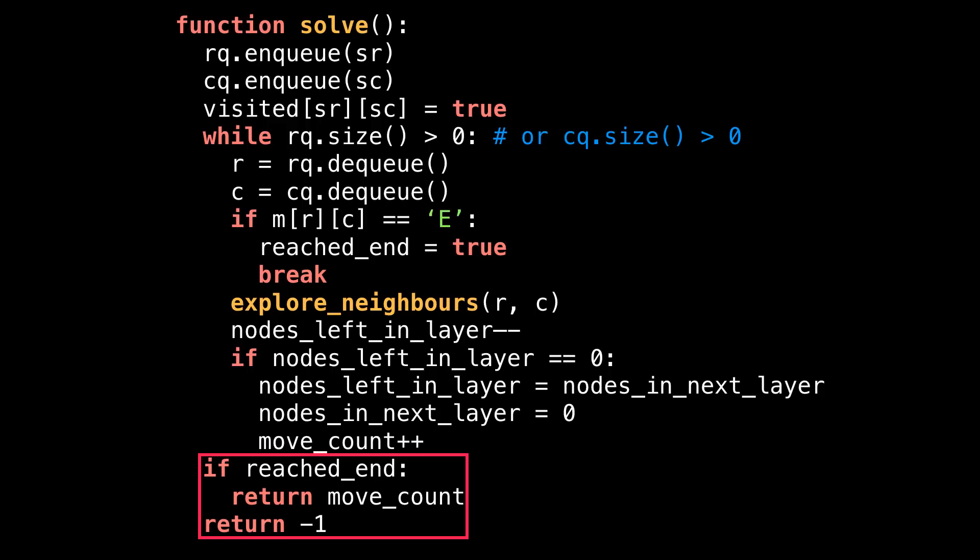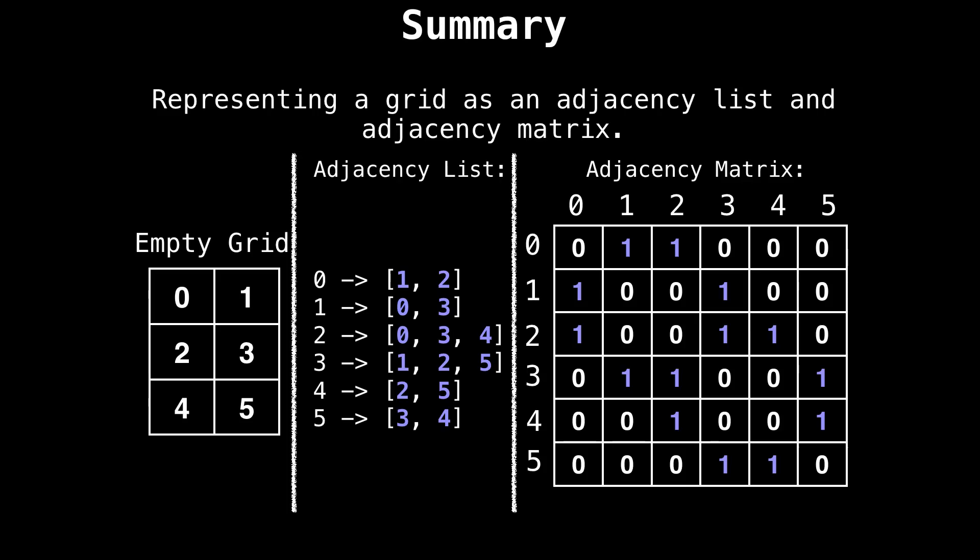At the end, if we are able to reach the exit, we return the move_count. Otherwise, we return -1 to indicate that the dungeon exit was not reached.